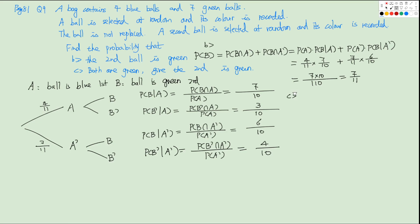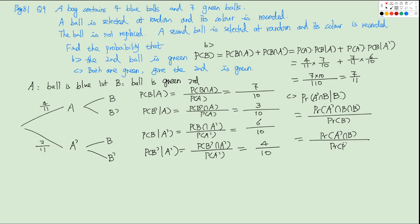For part B: find P(both green | second is green), which is P(A'∩B | B). This equals P(A'∩B) / P(B). P(A'∩B) = P(B|A') × P(A') = 6/10 × 7/11. P(B) = 7/11. So the answer = (6/10 × 7/11) / (7/11) = 6/10 = 3/5.